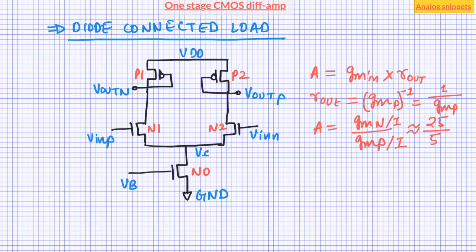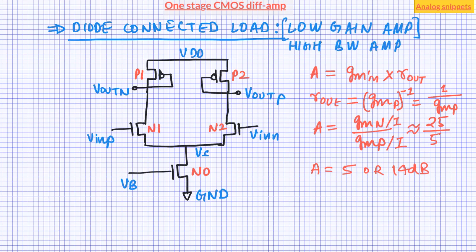In dBs, this gain is 14 dB. Since this gain value is not too high, the diffamp with diode-connected load makes a low-gain amplifier topology. But at the same time, this amplifier provides high bandwidth. This gain-bandwidth trade-off is one of the most well-known trade-offs in amplifier design. Because of the low gain and high bandwidth, this topology is widely used as the first stage of multi-stage amplifiers and comparators.